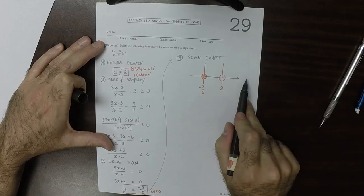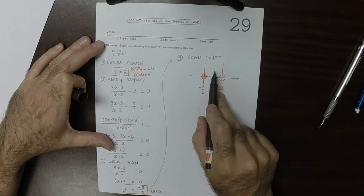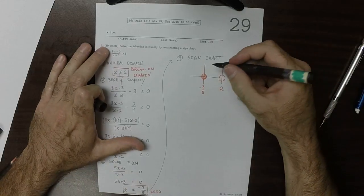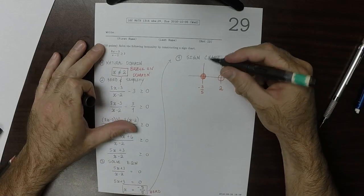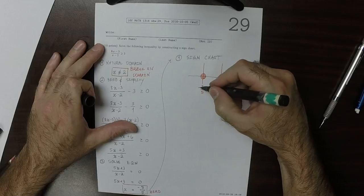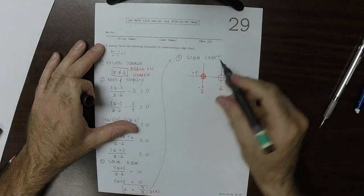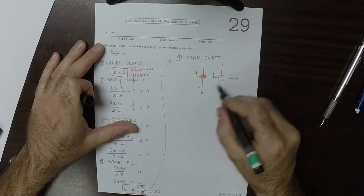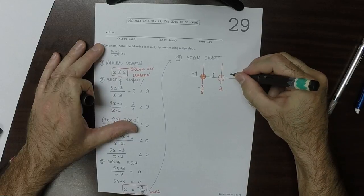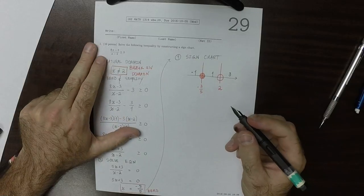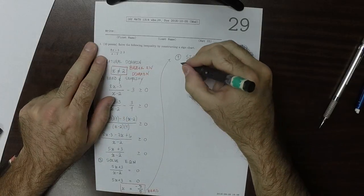Now, we've taken the reals and broken them into three regions. So now in each region, we're going to select a point. So something to the left of negative 3 fifths is negative 1. Something in here is positive 1, and something over here is 3.